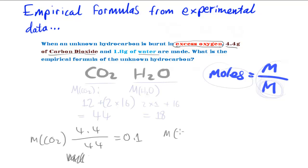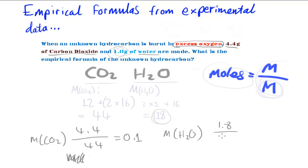To find the moles of H2O, we take the mass of H2O and divide it by the molar mass of H2O. So that's 1.8 divided by 18, which also gives us 0.1. So both CO2 and H2O give us 0.1 moles.